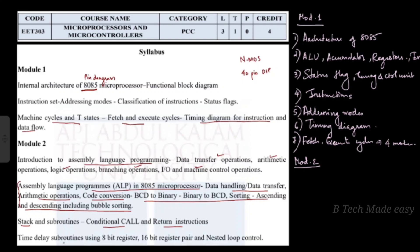We can use time delay subroutines using 8-bit registers, 16-bit register pairs, and nested loop control. If you use a delay, you can implement it using 8-bit registers, 16-bit register pairs, and nested loop control.